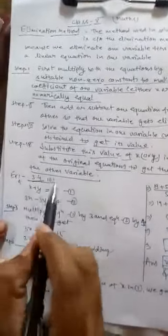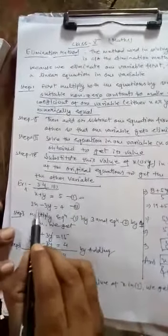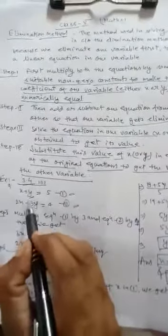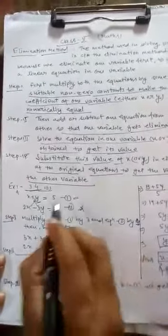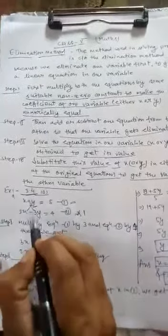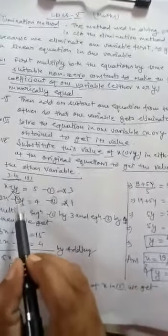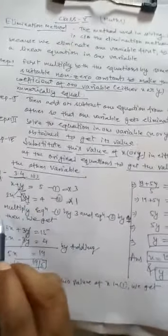Let us take an example from exercise 3.4, question 1(1). The first equation is X plus Y equals 5, and the second equation is 2X minus 3Y equals 4. Now, looking at the Y terms — Y in equation one and 3Y in equation two — we are going to eliminate Y. The coefficient of Y in equation one is 1, and in equation two is 3.